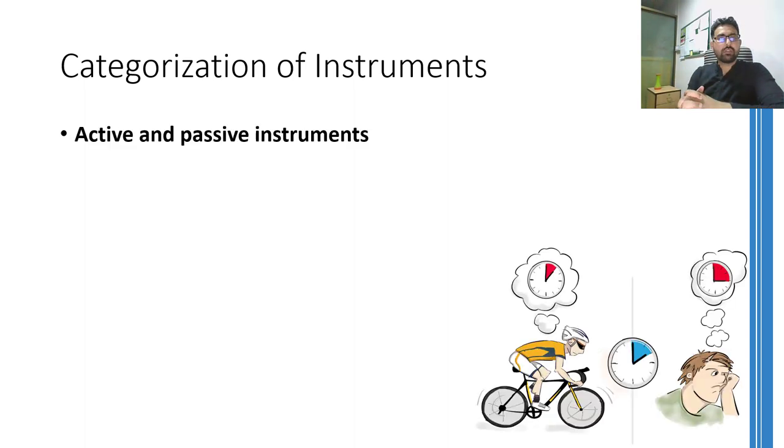let's talk about categories into which instruments are broadly categorized. Each category will dictate us to use that instrument in a specific kind of situation and would define type of measurement systems only. So, the first categorization which I'm going to talk about is whether an instrument is an active instrument or a passive instrument.